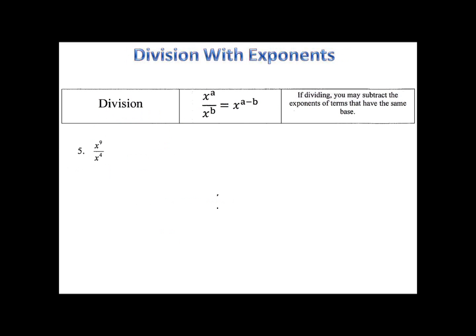Now, how about division? Well, if you thought multiplication was easy, division is also. Instead of adding, we subtract. x to the 9 over x to the 4. 9 minus 4 is 5. So that gives us x to the fifth.